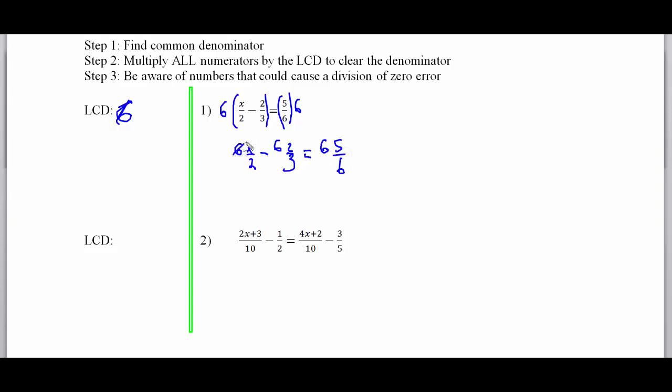What we can do is simplify this out. 6 divided by 2 is 3, so this is 3x. I've got 6 divided by 3 is 2, so that makes minus 4. And then I've got 6 divided by 6, which is going to be 1, so 1 times 5 is 5. And now we can solve for x.